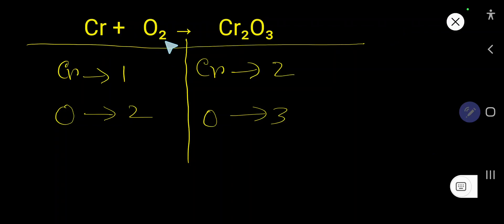How to balance Cr plus O2 that produce Cr2O3. On the left hand side we have 1 chromium and 2 oxygen. On the right hand side we have 2 chromium and 3 oxygen.